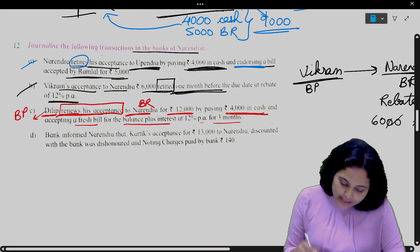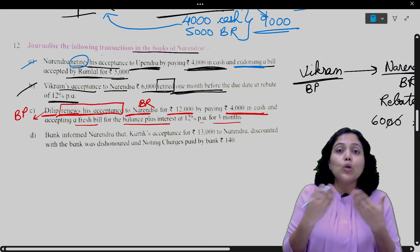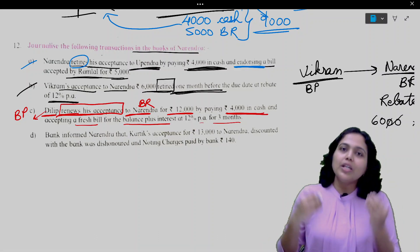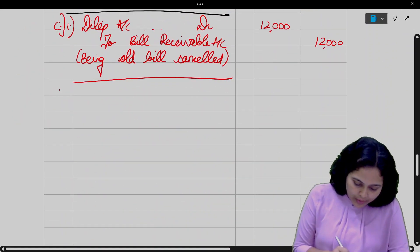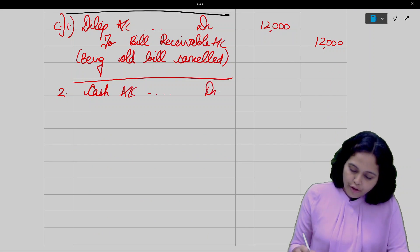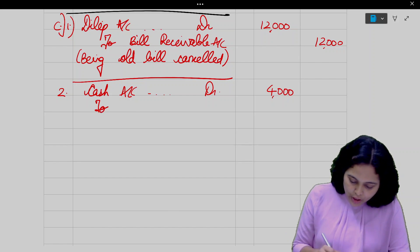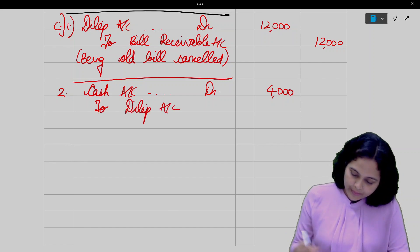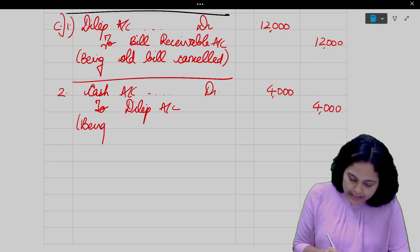Second entry: Dilip paid 4,000 in cash. If Dilip has paid, Narendra has received money. So in Narendra's books, a cash received entry will come. Cash account debit 4,000, to Dilip account. Narration: Part payment received.